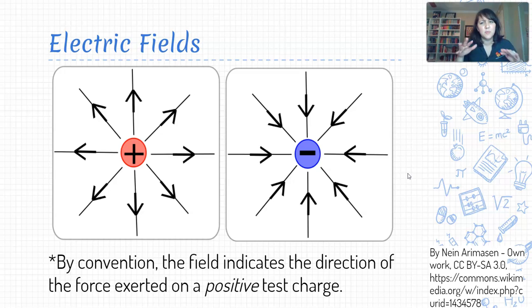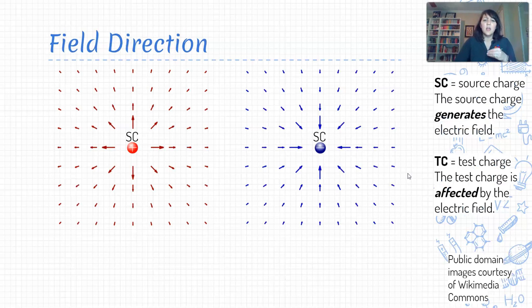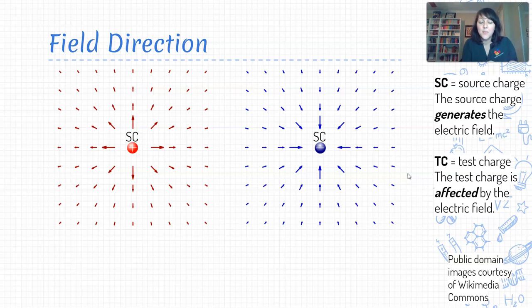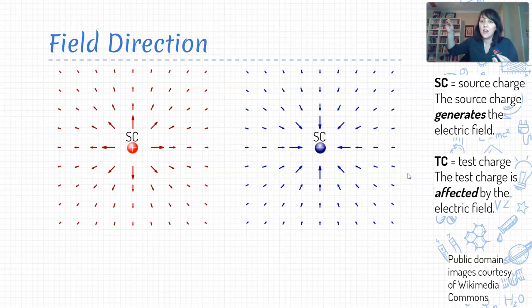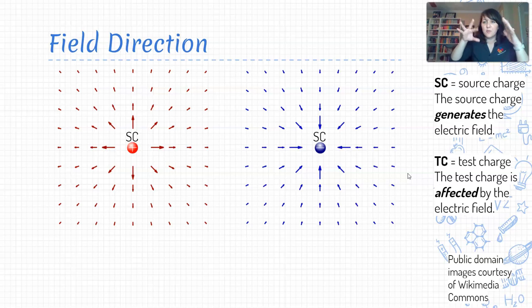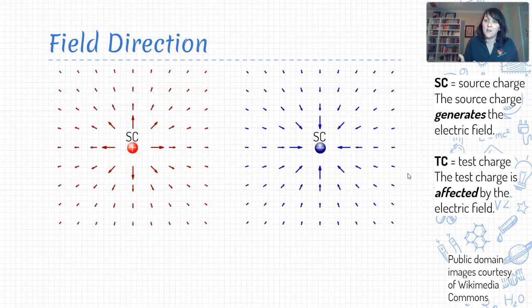I just used the term 'test charge' and I've been inserting the idea of 'source charge' along the way as well, so let me clarify. Since we're dealing with two different interacting charges, it's helpful to think of them in two categories. The source charge is whatever charge is creating the electric field — it's the center of the story. The test charge is the second charge that enters the scene and is affected by that electric field. So the source charge is the thing creating the field, and the test charge is the thing entering the field and being affected by it.